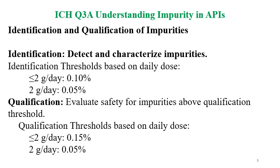Qualification means evaluating the safety of impurities above the qualification threshold. These qualification thresholds are given on the basis of maximum daily dose. For drug substances with a daily dose of less than 2g, the qualification threshold is 0.15% — a somewhat higher or more relaxed limit compared to the identification limit. For drug substances with a daily dose of 2g or above, the qualification threshold is 0.05%.